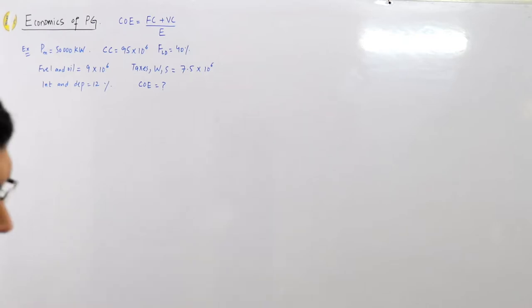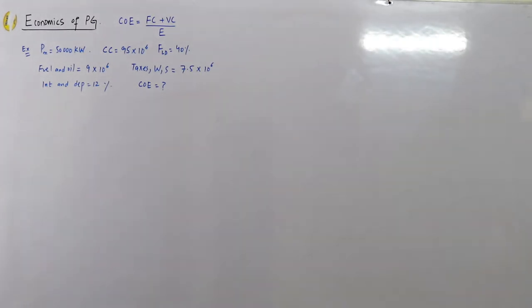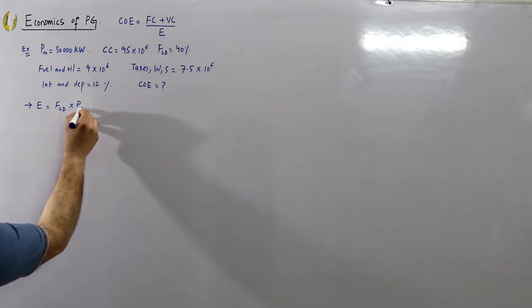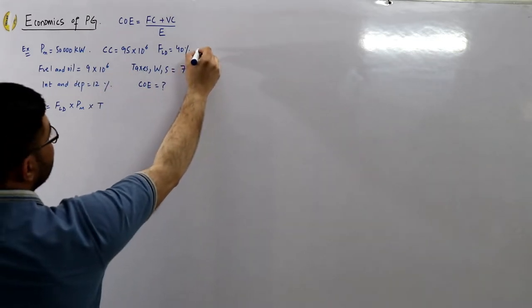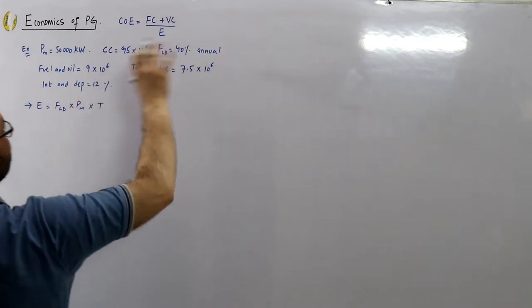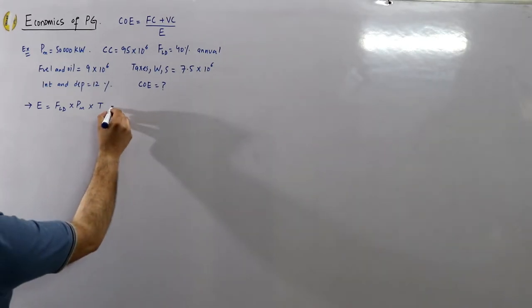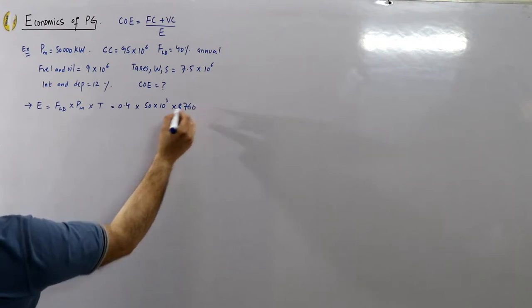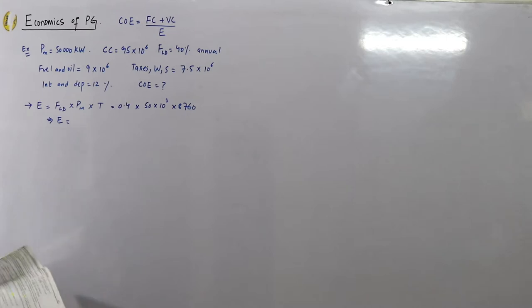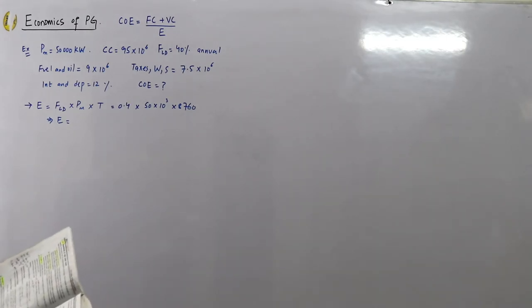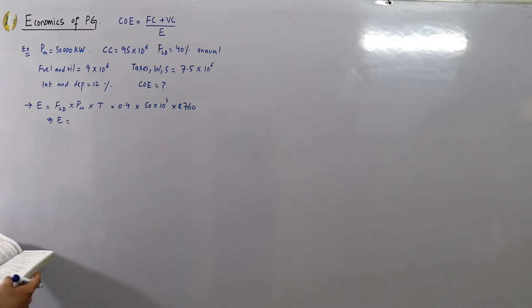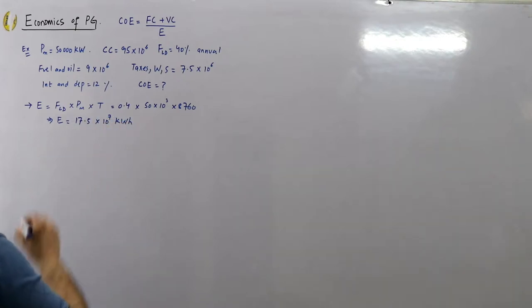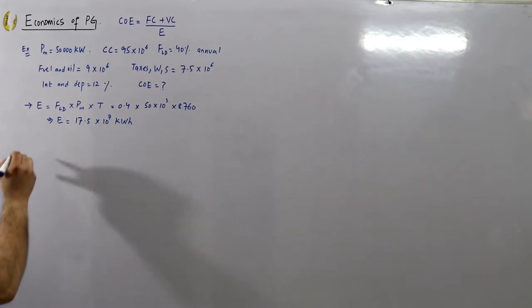First, find the energy units using the load factor formula: energy units = load factor × maximum demand × time. Since we have the annual load factor, calculations are done annually. So: 0.4 × 50,000 kilowatts × 8,760 hours = 17.52 × 10⁷ kilowatt hours.